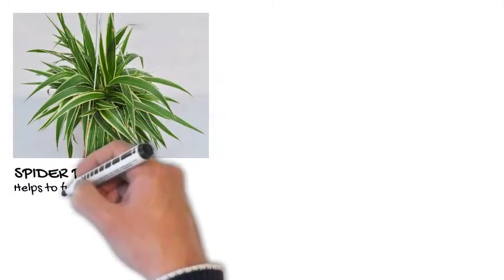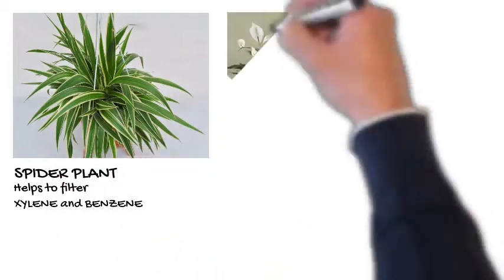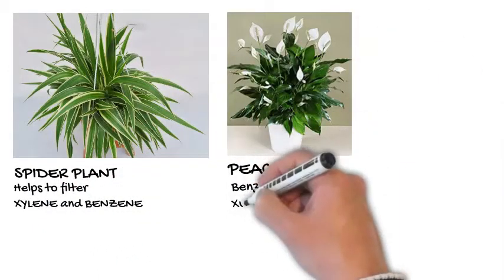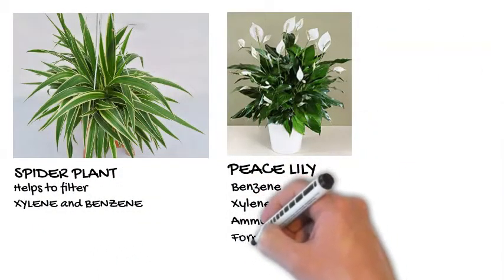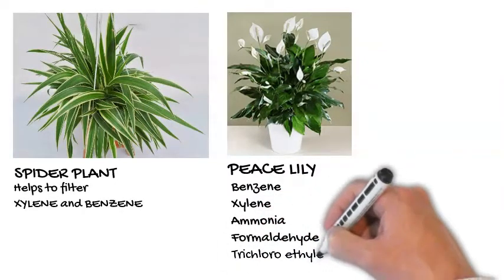The common spider plant helps to filter xylene and benzene. Peace Lily filters benzene, xylene, ammonia, formaldehyde, and trichloroethylene.